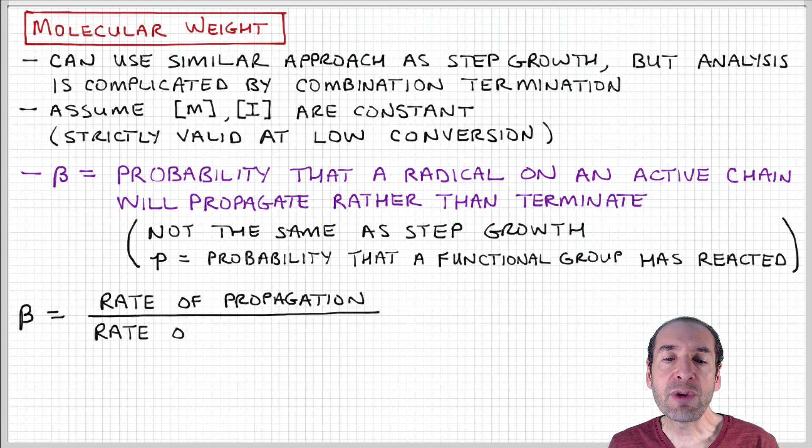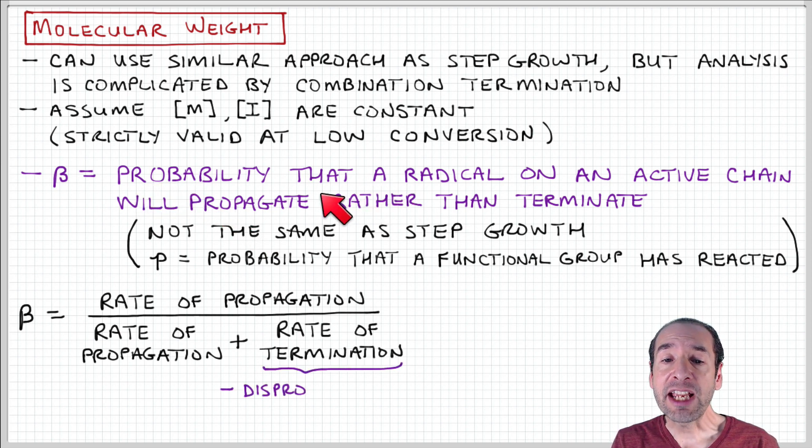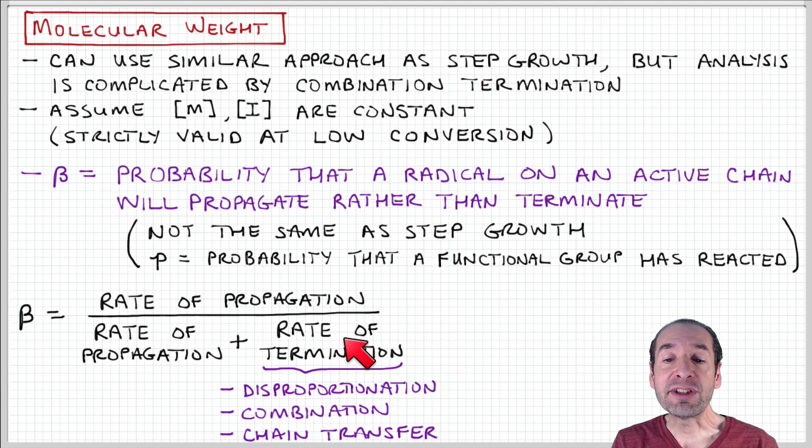If we want to develop an expression for this probability, we can notice that the chance that a radical group on an active chain will continue to propagate could be expressed as a ratio of the rate of propagation to the rate of all the possible processes. That includes propagation and termination. So the sum of the rate of propagation and termination in the denominator is all the possible outcomes. In the numerator, we have the outcomes of interest to us, which is propagation.